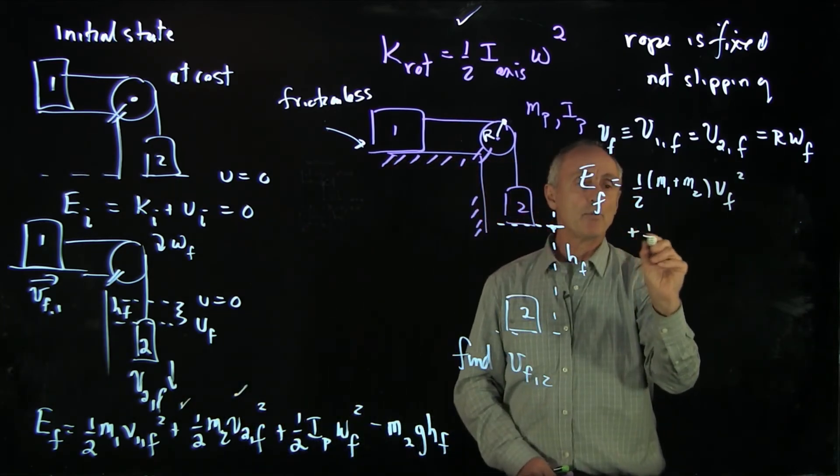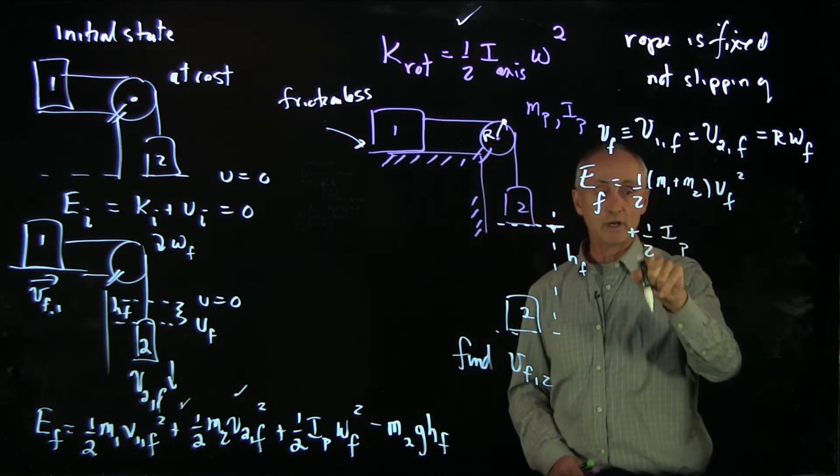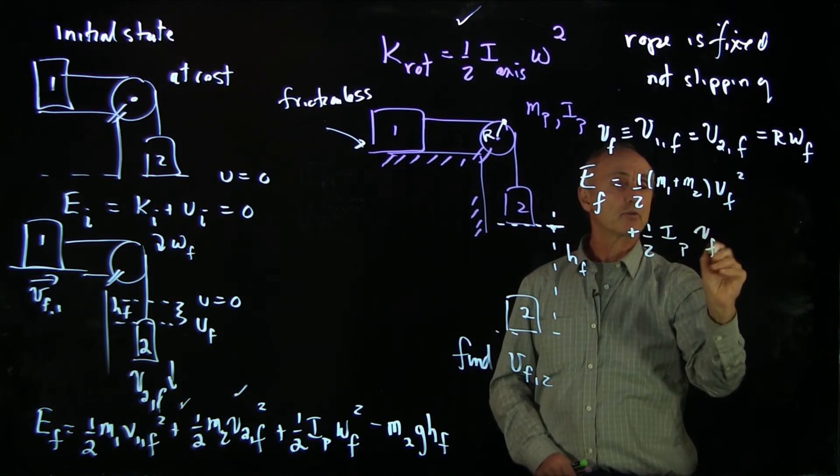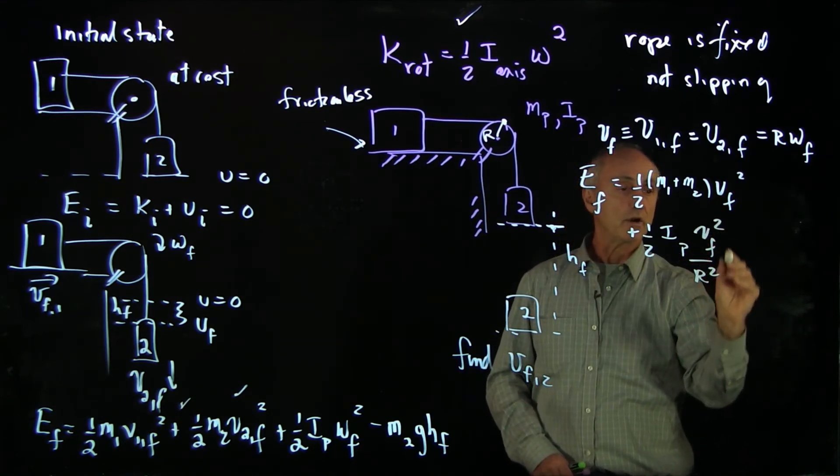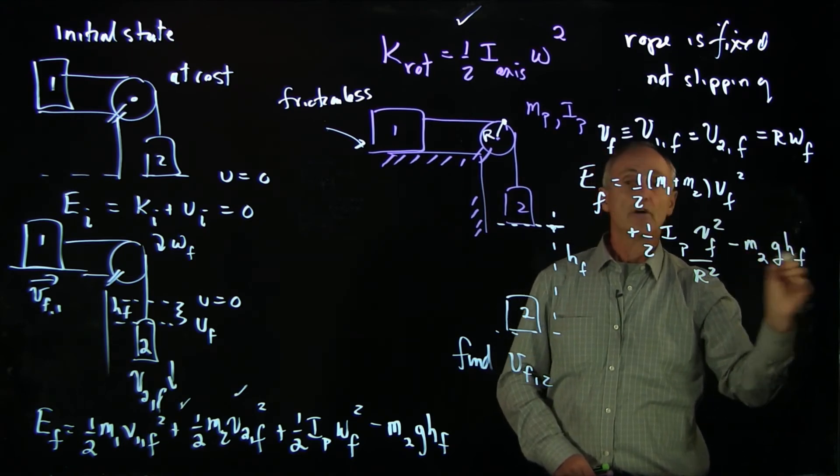We have the moment of inertia, kinetic energy associated with the wheel, which is 1 half i omega final squared, which is v final squared over r squared minus m2 gh final.